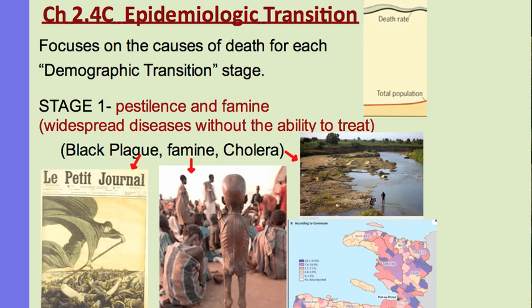Stage 1 of the epidemiological transition corresponds to demographic transition stage 1 — before any industrialization or medical revolution — when there is a high crude birth rate and a high crude death rate. The typical diseases in this stage are famine, which is not enough food to eat, and infectious diseases like pestilence — such as cholera or influenza — diseases you would get from being contaminated by somebody else, requiring antibiotics to cure.